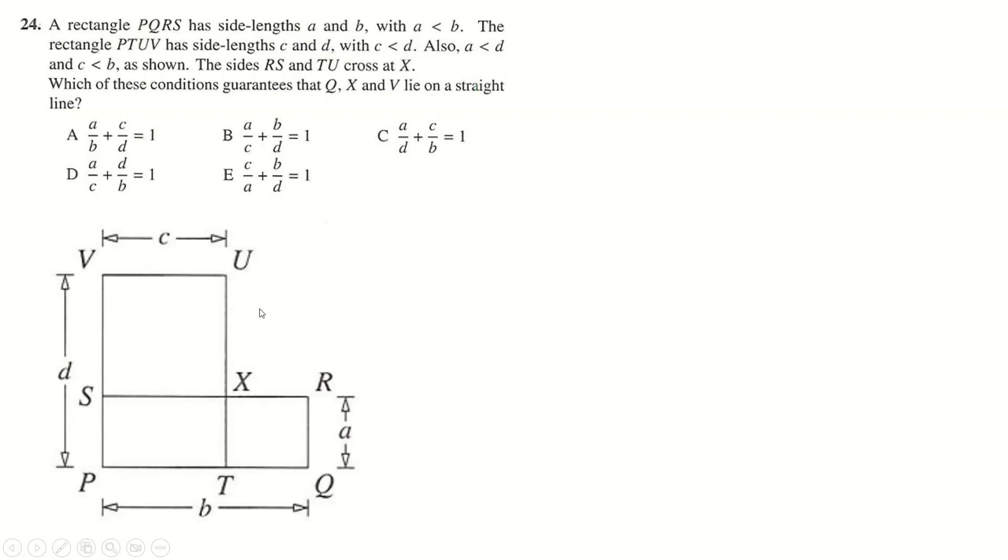Here we have an interesting shape down here. And it's saying that what condition guarantees the line from V to X to Q is a straight line. The way that this would be a straight line is if the gradients of each of these are the same. We know they meet at this point. So, if I just have this gradient match this gradient, then it would be a straight line. So, let's just consider the gradient. Gradient is rise over run.